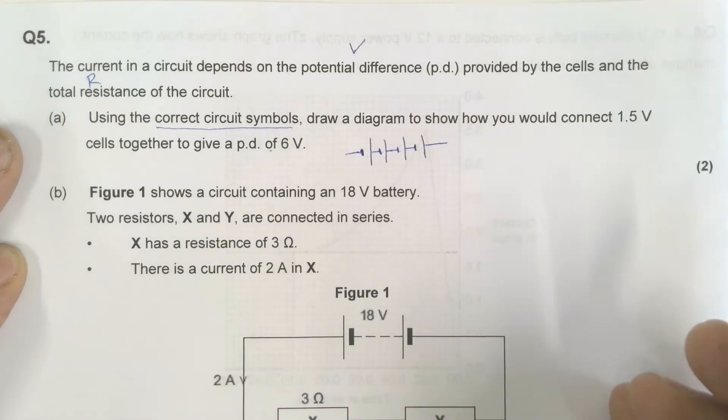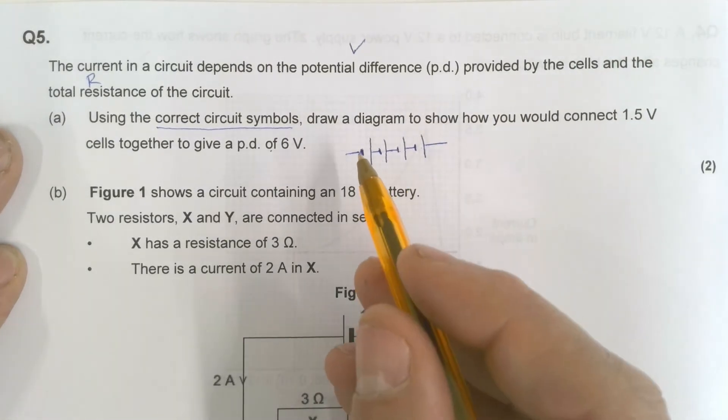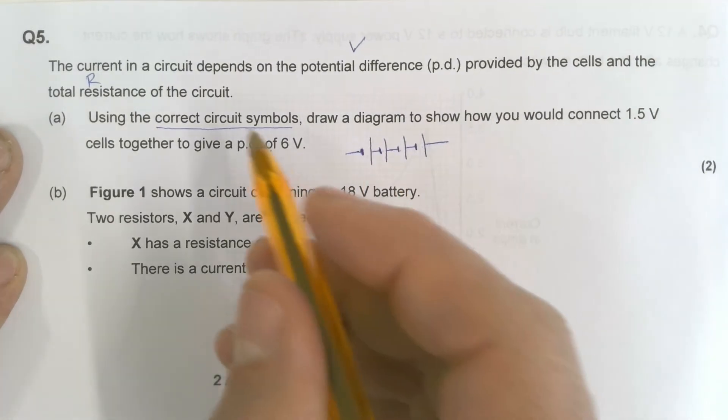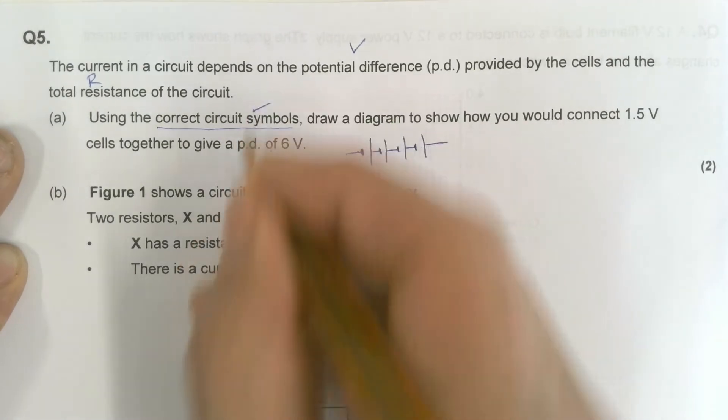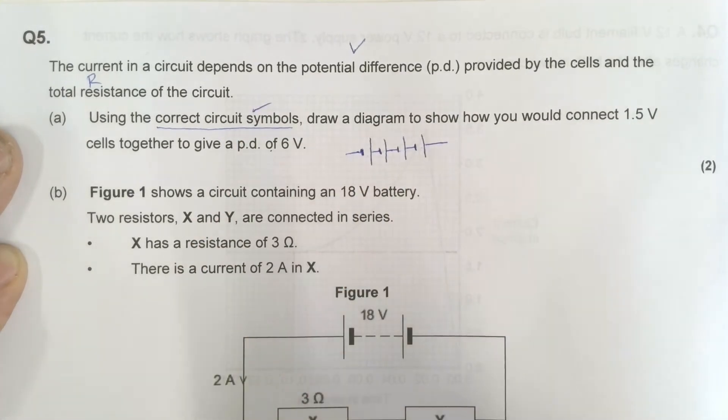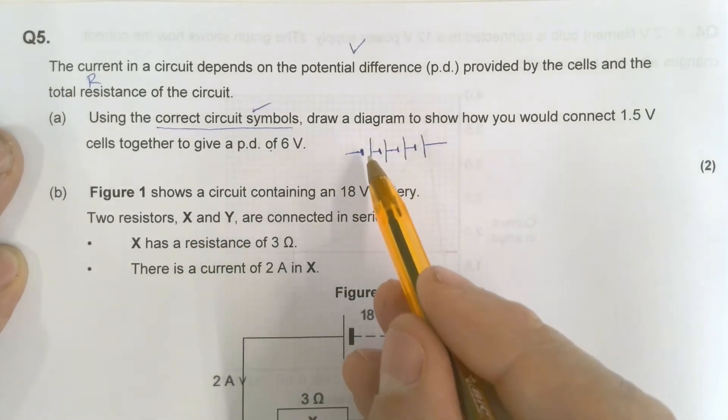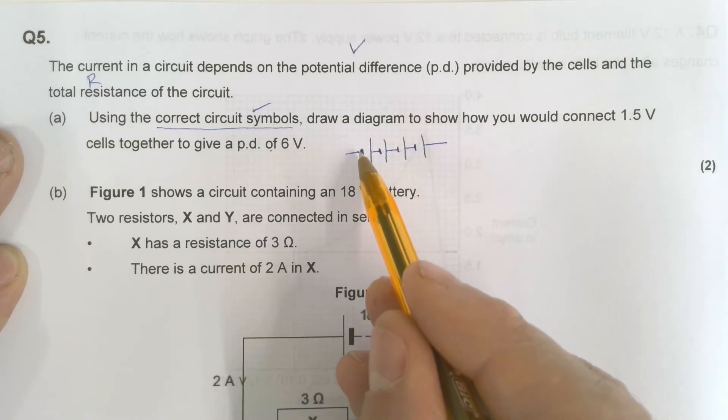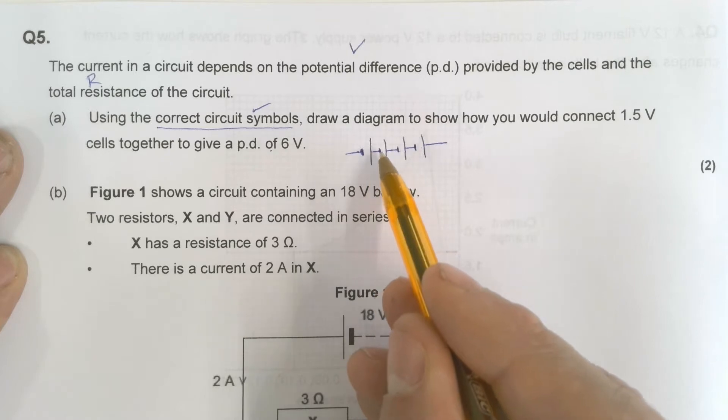Okay, so it's worth 2 marks. I suspect it's probably 1 mark for the circuit symbols, 1 mark for putting them in series like that. Make sure that they go, so the positive is the tall skinny one, positive to negative, positive to negative.